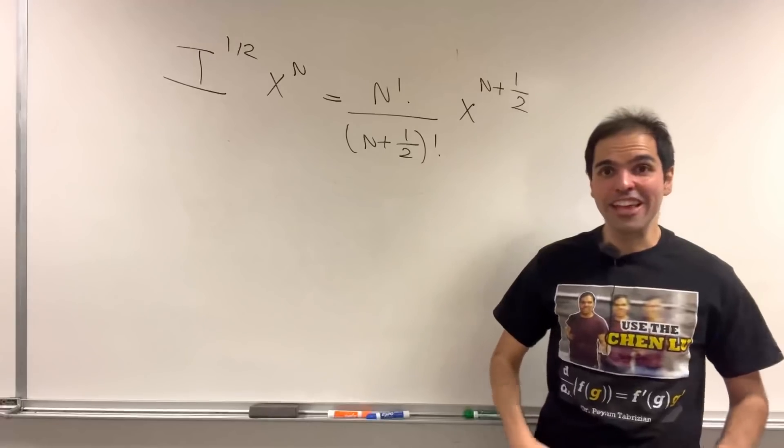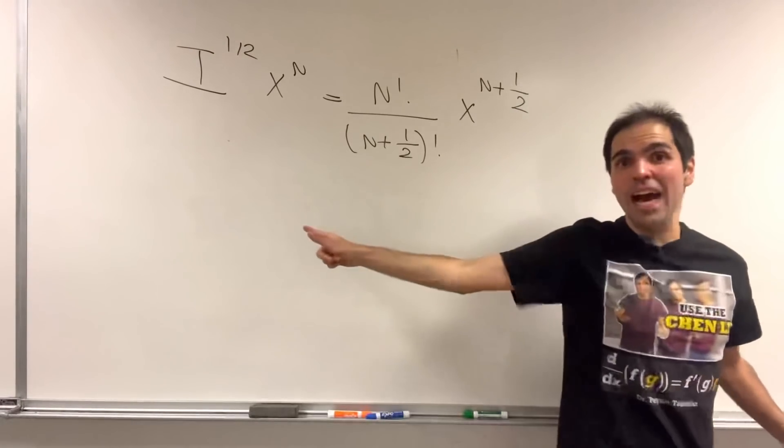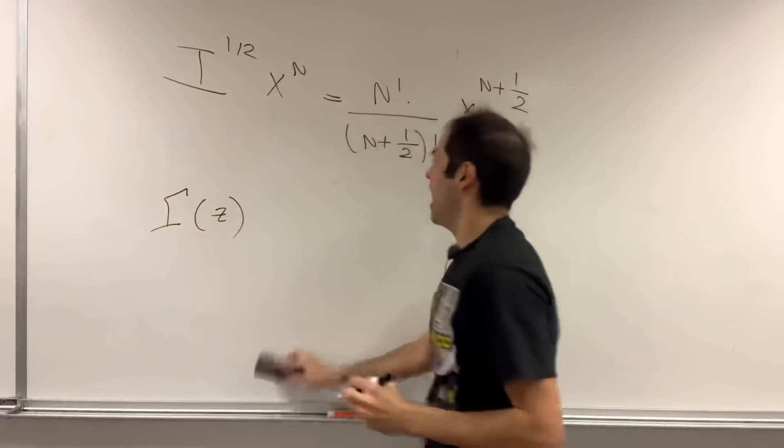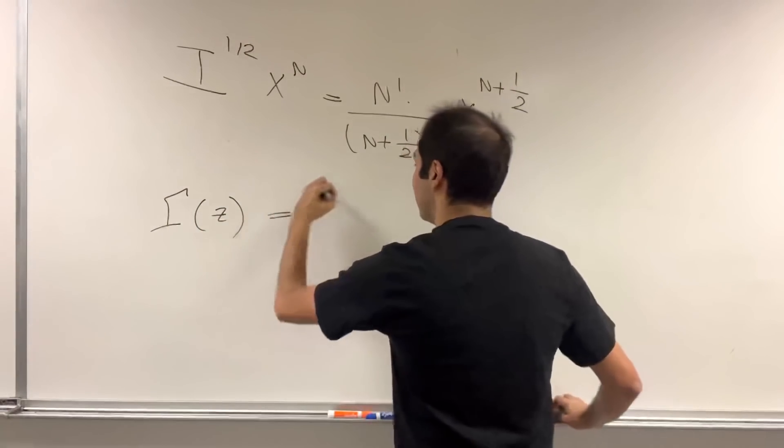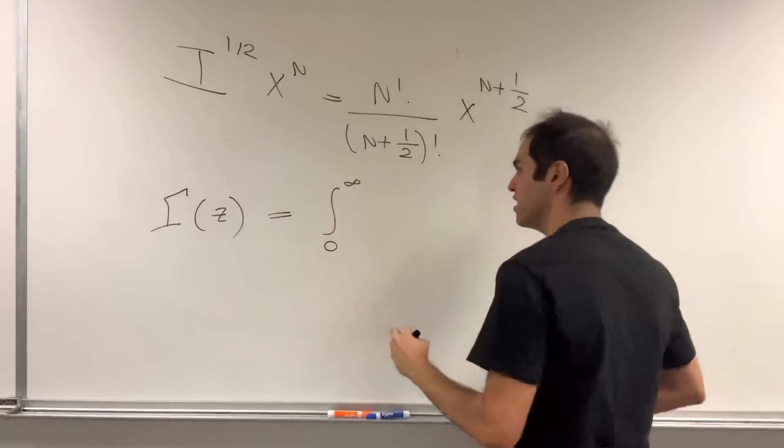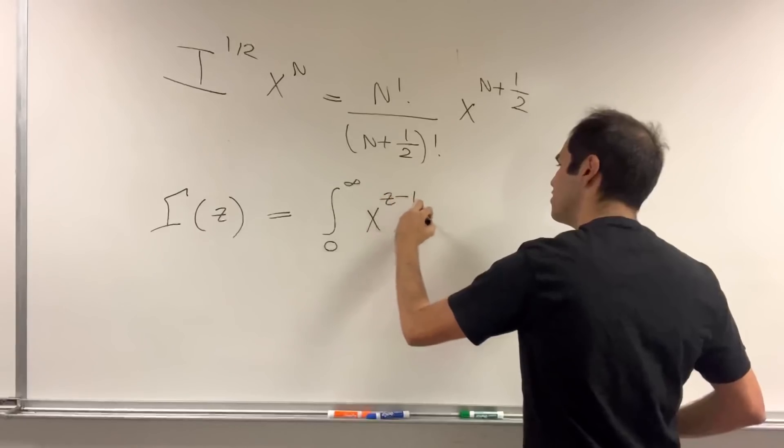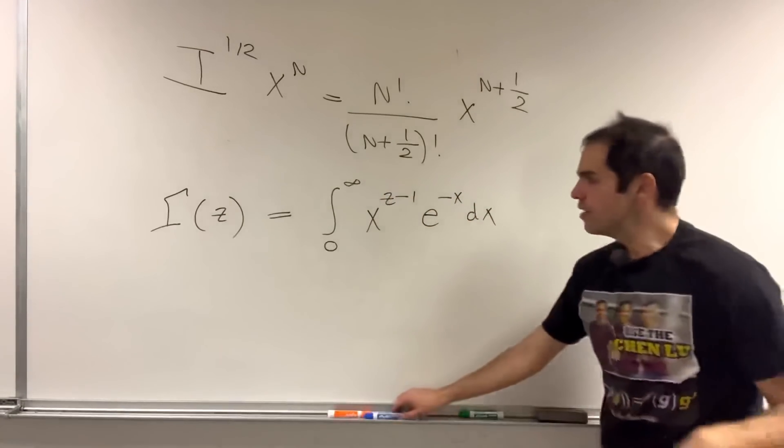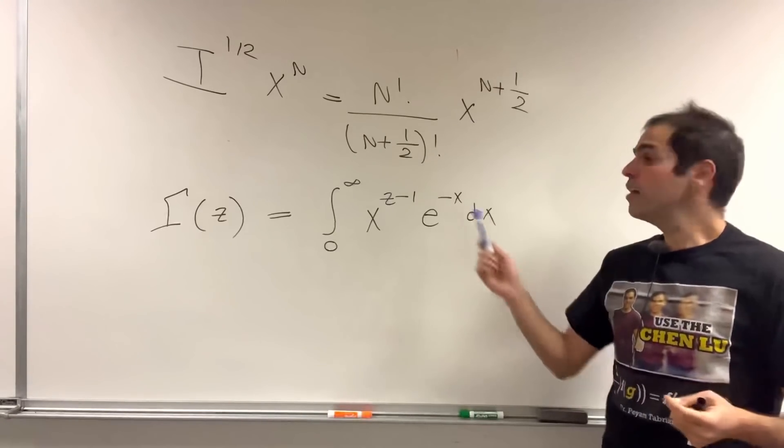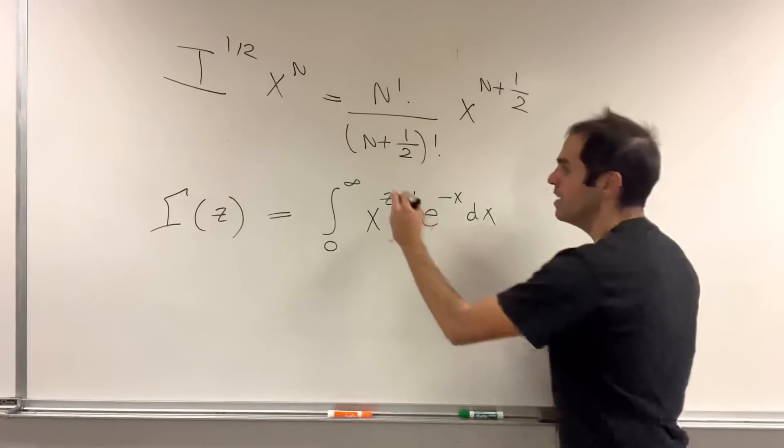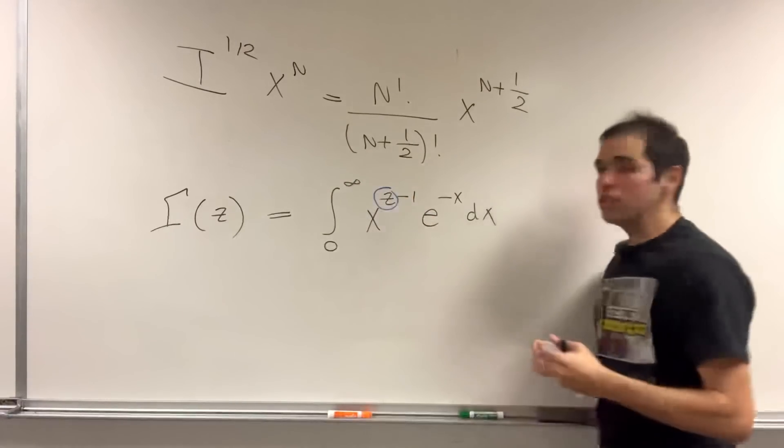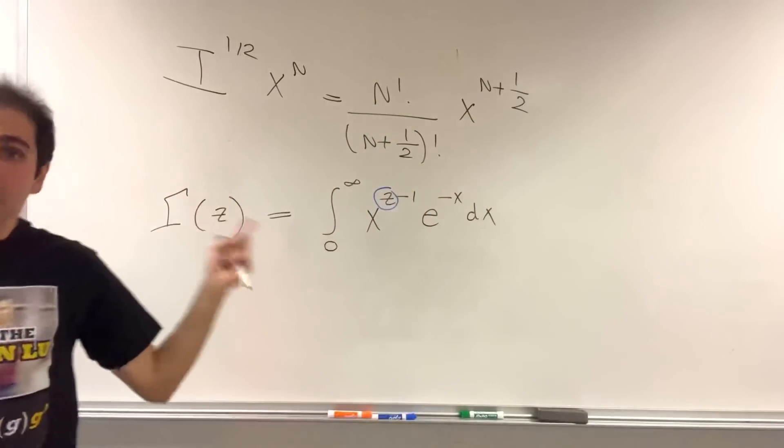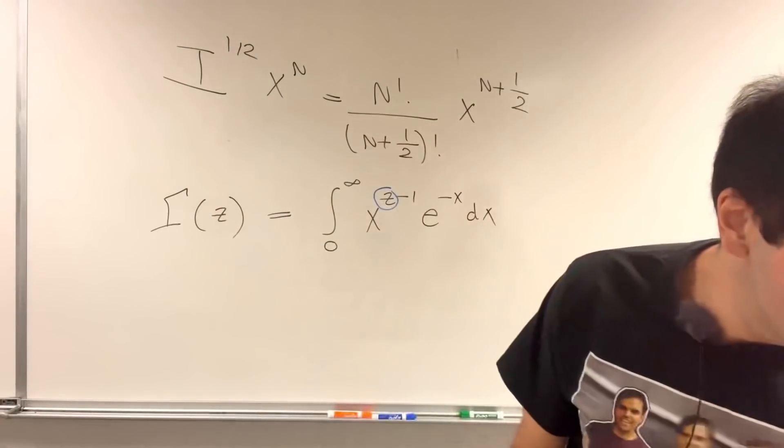What saves us here is, drum roll, the gamma function. So, there's this wonderful creature called gamma of z, which is defined via an integral. So, integral from 0 to infinity, x to the z minus 1, e to the minus x dx. And what you have to understand here is that x is just a dummy variable, which gets integrated out. So, this is really a function of z.